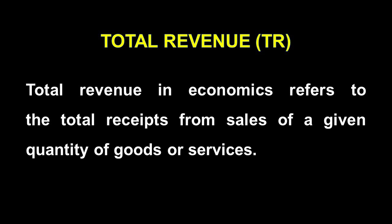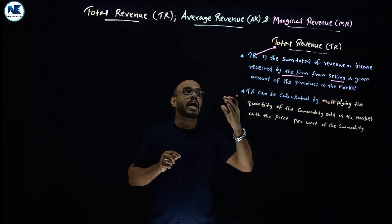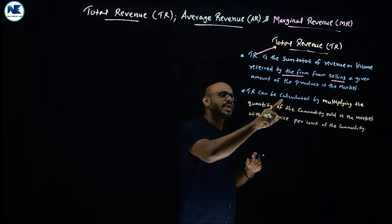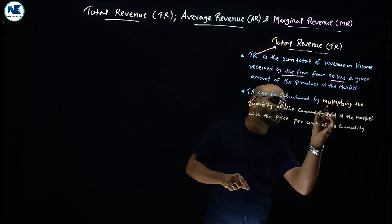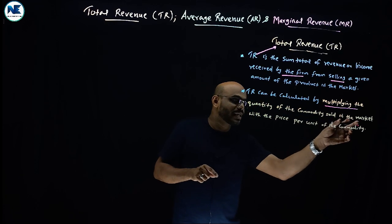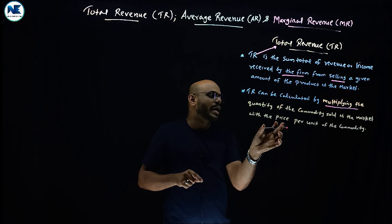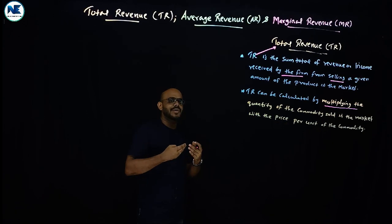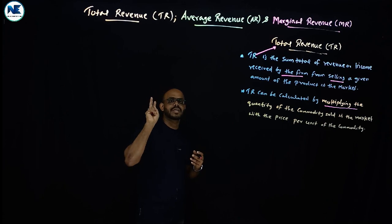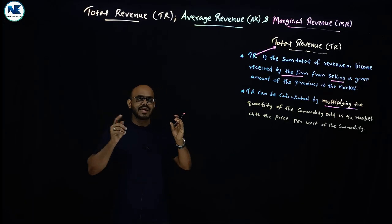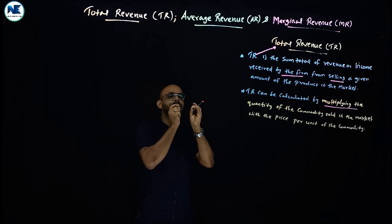How can we calculate total revenue? Total revenue can be calculated by multiplying the quantity of the commodity sold in the market with the price per unit of the commodity.